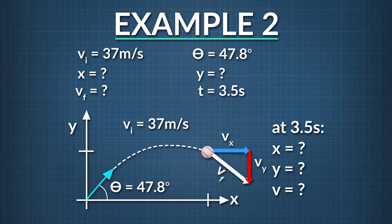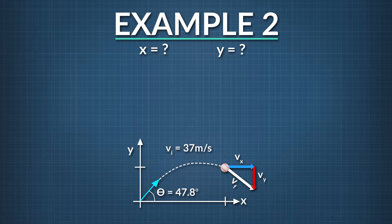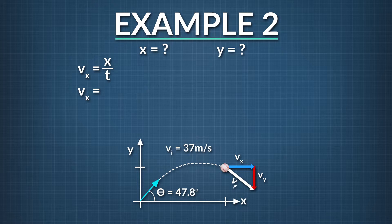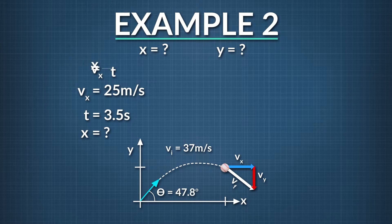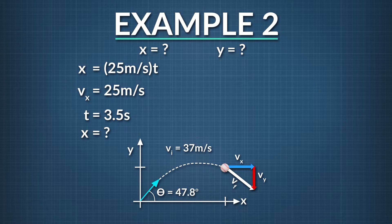Let's solve for the position first in the x-direction and then in the y-direction. If we consider only the motion in the x-direction, we know that our ball is not accelerating in the x-direction since no force is acting on it in this direction. The only equation we can use in the x-direction is our constant velocity equation, v equals x over t. Our velocity in the x-direction is always the same along our journey. Since the ball doesn't accelerate, it is equal to the initial velocity, which is 37 meters per second times the cosine of 47.8 degrees, equals 25 meters per second. Time is 3.5 seconds and we're solving for the horizontal position x. When we rearrange our equation, we find that the x-position equals velocity in the x-direction times time. The x-position at 3.5 seconds equals 25 meters per second times 3.5 seconds, which equals 87.5 or 88 meters.